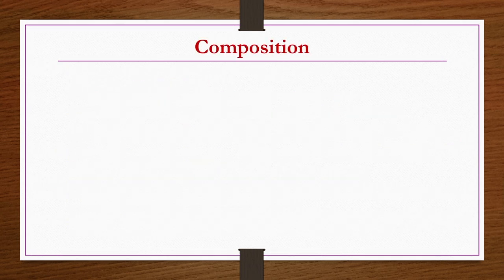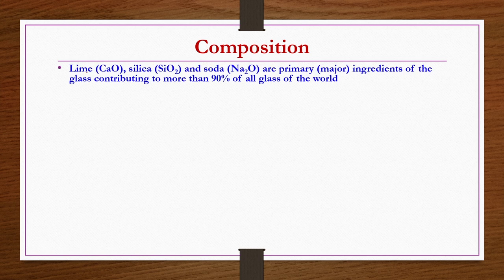Regarding composition, the three major constituents of glass are lime (calcium oxide, CaO), silica (SiO2), and soda (Na2O). These are the major ingredients of any glass — at least two of them would be present. Only two components are there in sodium silicate type glasses; otherwise all three are present in almost all glasses, accounting for more than 90 percent of glasses produced worldwide.